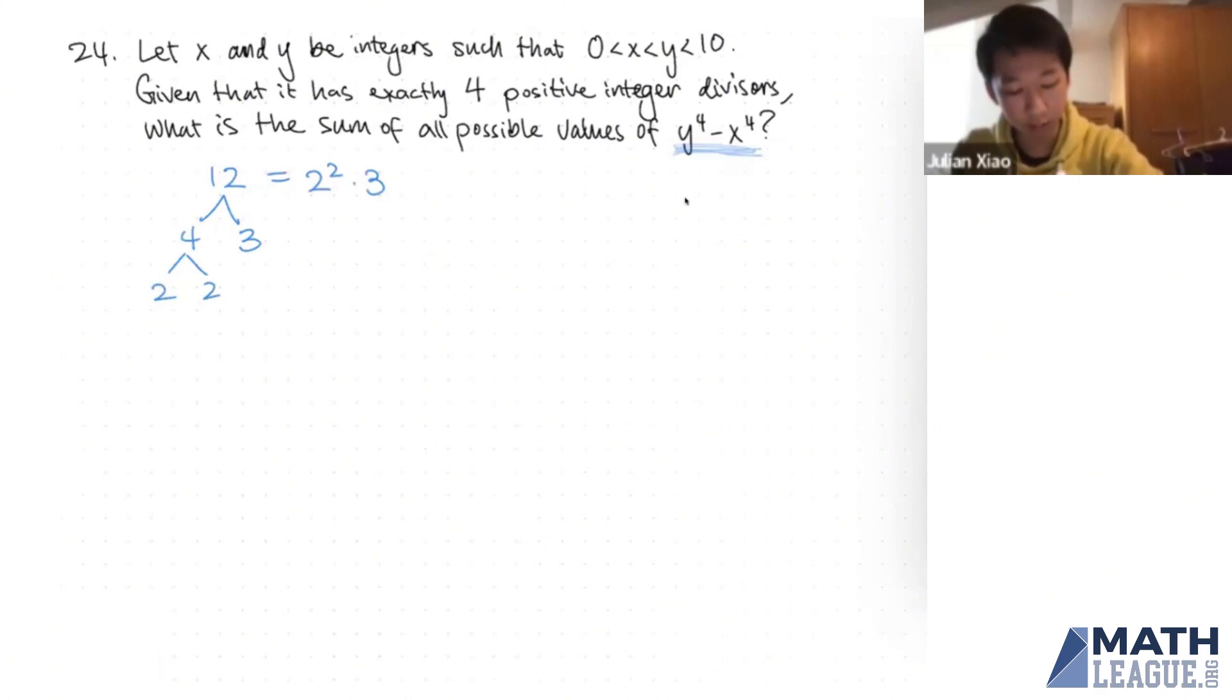Now what you do is you take a look at all the exponents of these prime numbers, which in this case are 2 and 1. Now you want to take each of these exponents and add 1 to each of them. And then you multiply this together to get 6. So the number 12 has 6 positive integer divisors. So when we're given any number, you just prime factorize it, add 1 to each of the exponents, and then multiply.